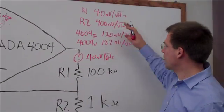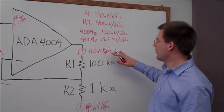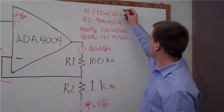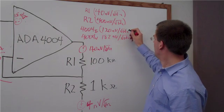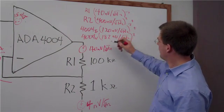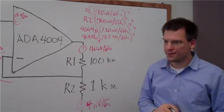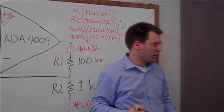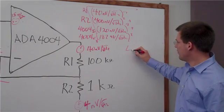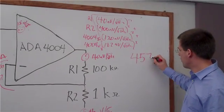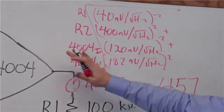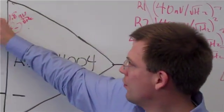Now what we do is we want to sum all of these together. We do the sum of squares. You would square every one of these, add them together, take the square root. That ends up being 457 nanovolts per root hertz. And if we refer that back to the input, we get 4.52.